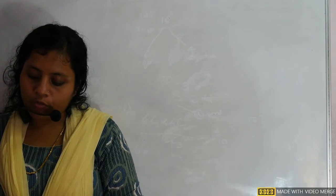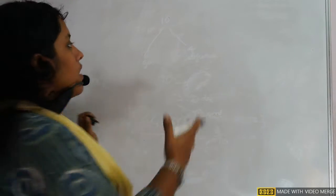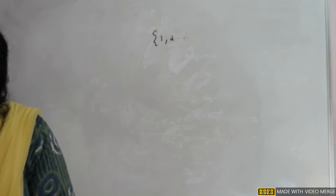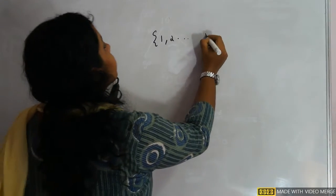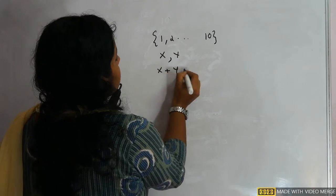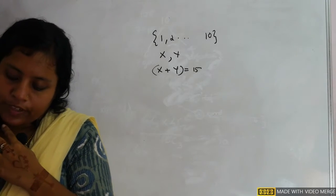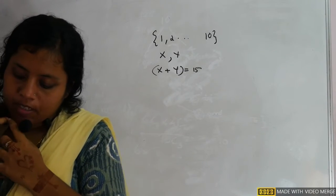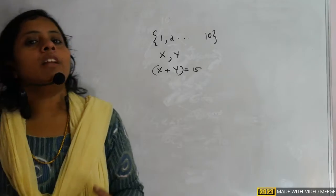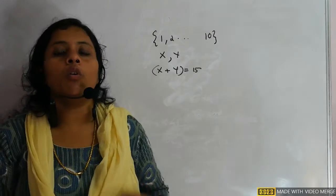Two numbers x and y are drawn from 1 to 10 such that x + y = 15. What is the conditional probability of getting exactly one of the two numbers being even? Although this looks like a conditional probability question, it is very easy if we use the classical method.